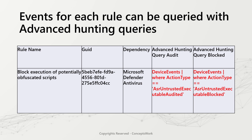To query events for this particular rule, the filters you have to use are ASR, untrusted, executable, audited, and blocked. The table that you have to query is device events.